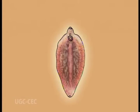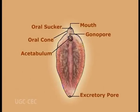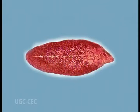Now we will discuss the morphology. Look at the figure. It is an ovular-shaped animal that starts with the mouth and ends with the excretory pore. It is dorsoventrally flattened — that is why it belongs to phylum Platyhelminthes. You can observe the mouth, oral sucker, oral cone, gonopore, acetabulum, and excretory pore. These are the main external features of the liver fluke.